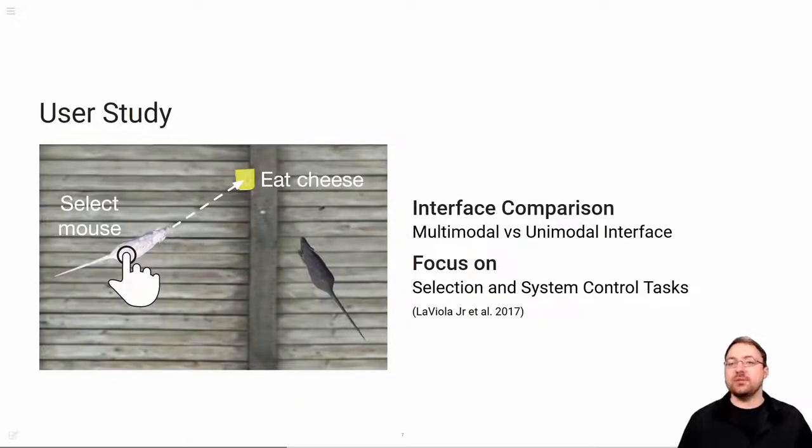To tackle this shortcoming, we conducted a user study to investigate the cognitive load caused by different interfaces. Therefore, we compared a multimodal speech and touch interface with a unimodal touch-only interface. We specifically focused on selection and system control tasks. A selection task is a simple task where the user has to select a virtual object like the white mouse, while in a system control task the user has to instruct the system to perform a certain action, for example that the selected mouse should eat the cheese. Selection and system control tasks are not exclusive to the domain of digital tabletop games, but an essential task that occurs in many application domains.